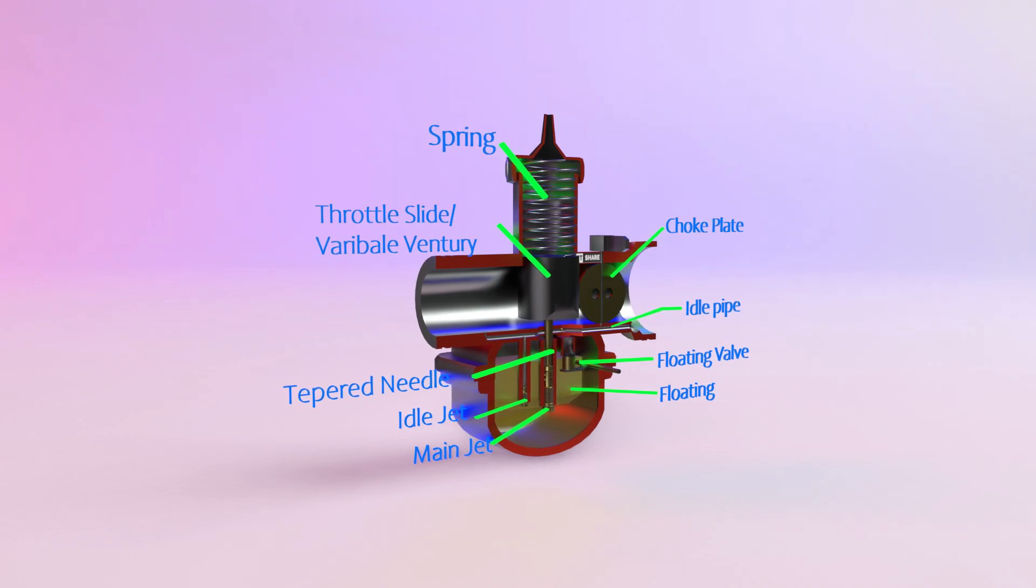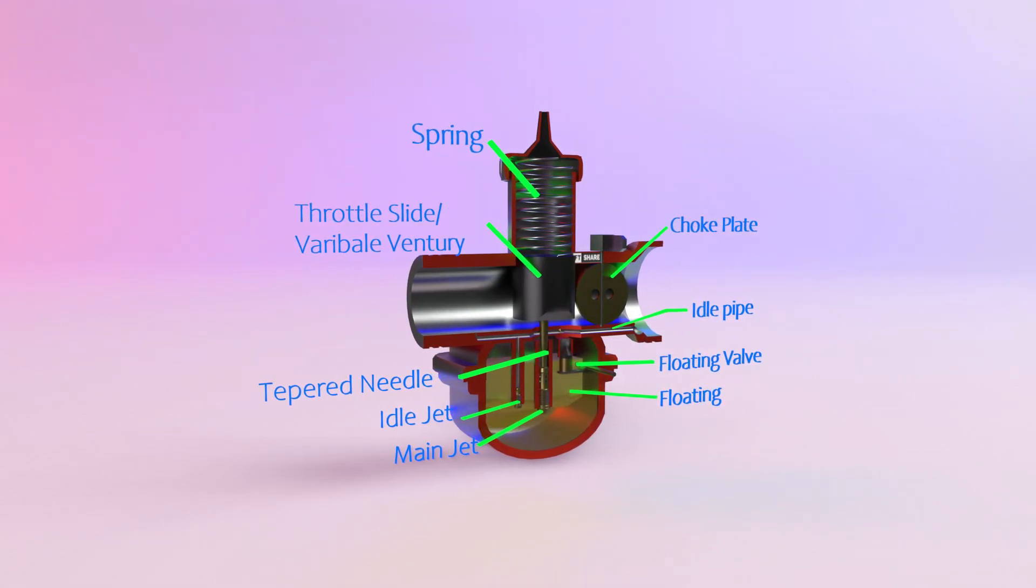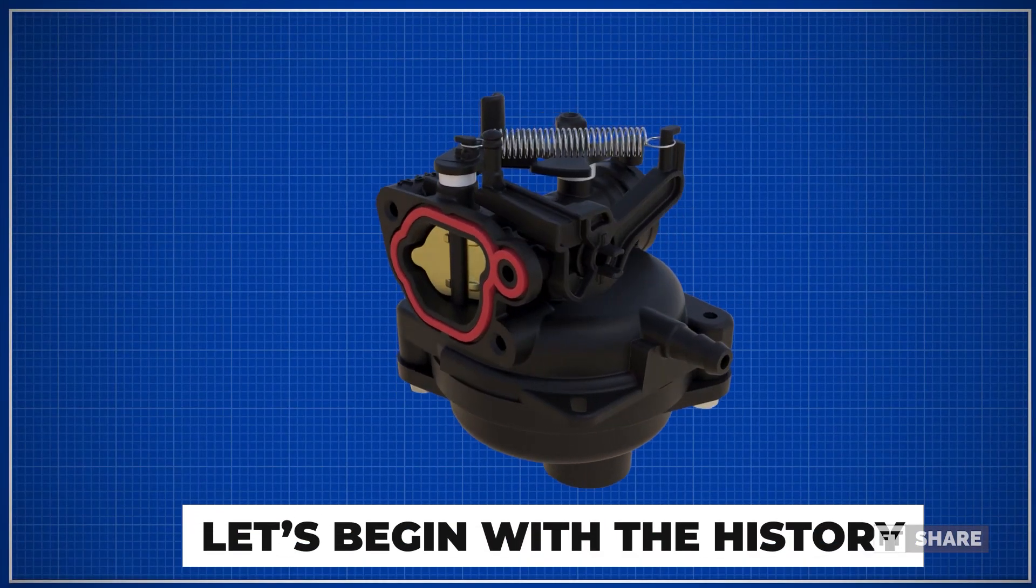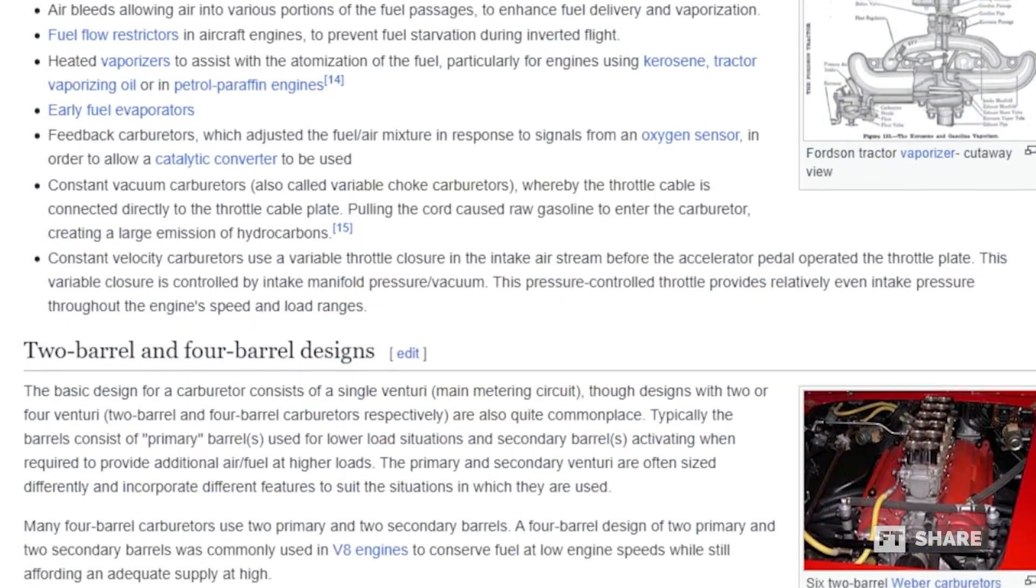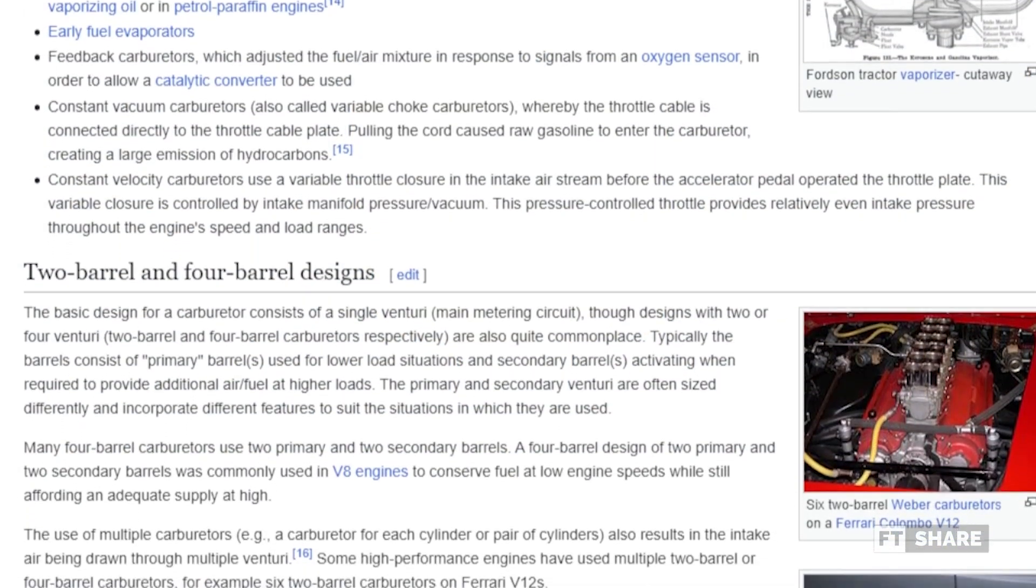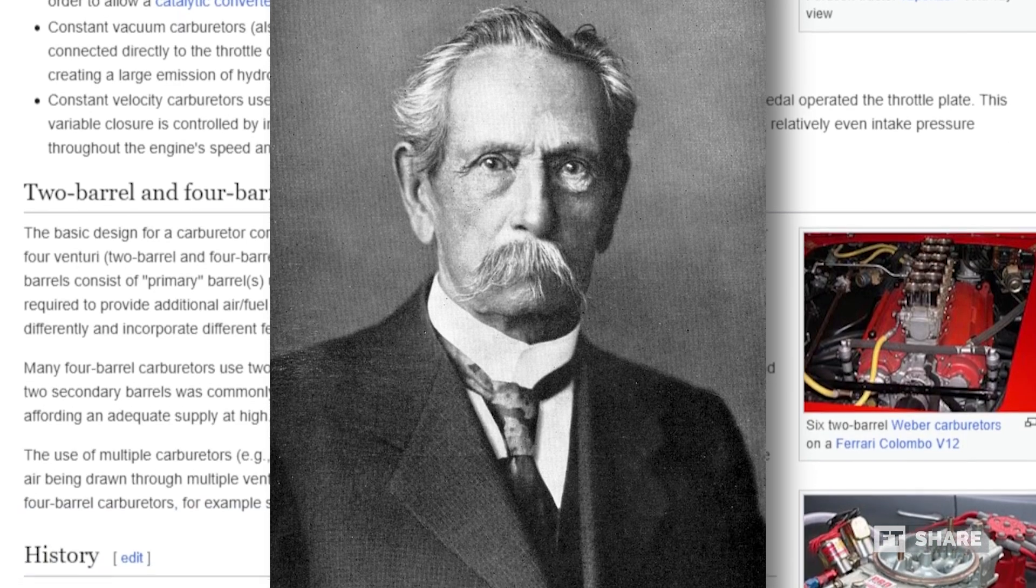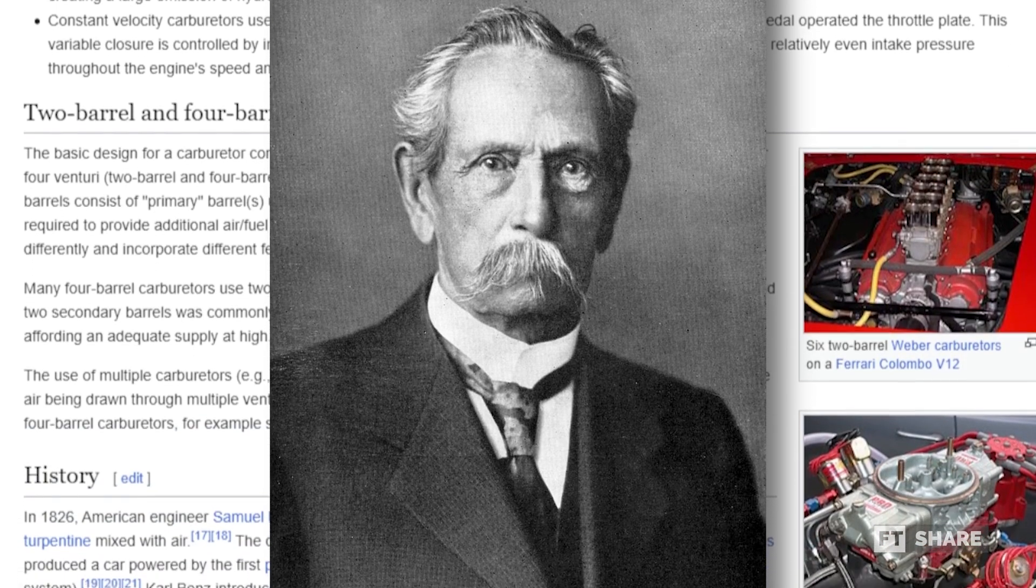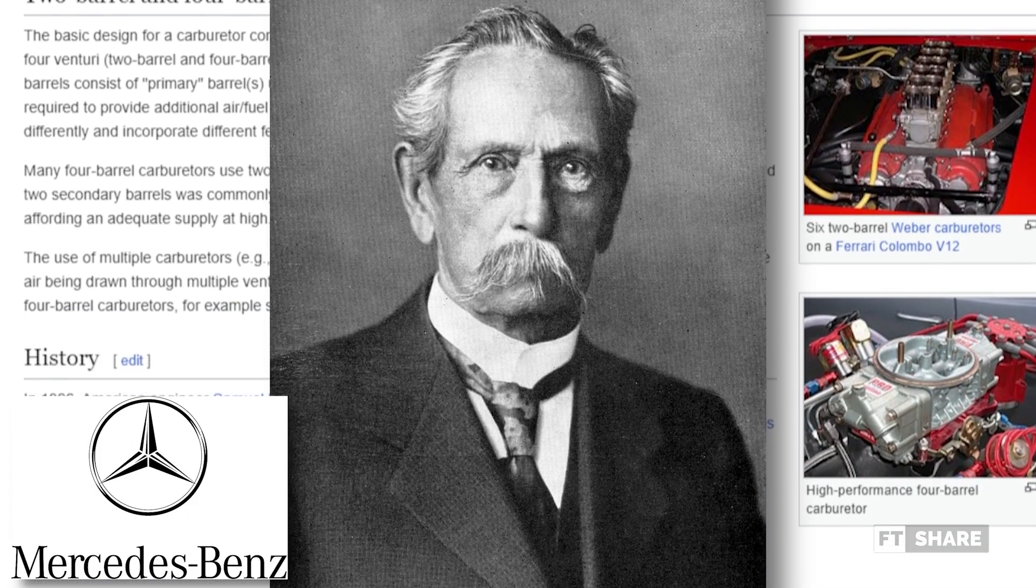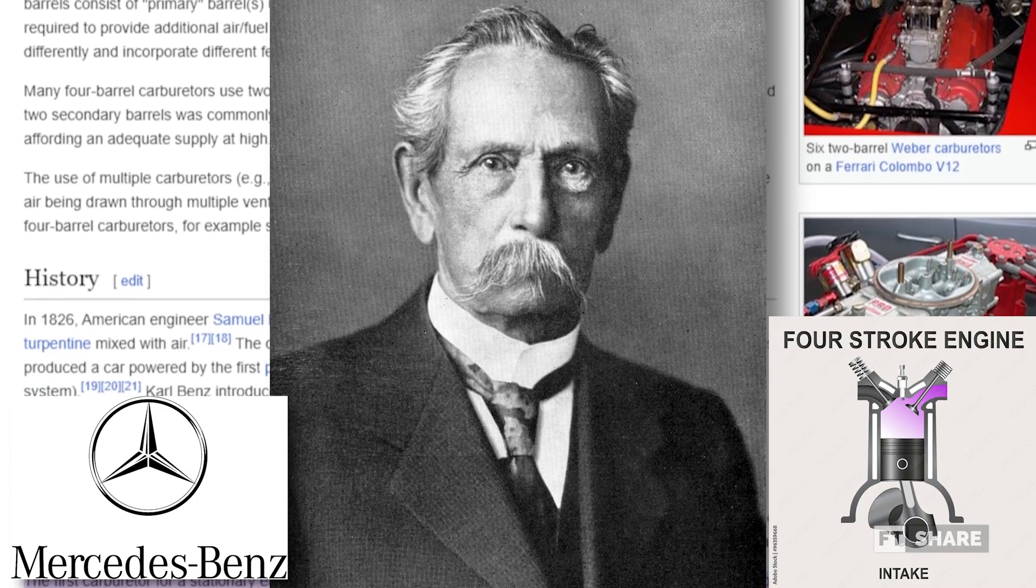Here is an overview of the carburetor. Let's begin with the history. The carburetor was first used in 1885 and was invented by Karl Benz, a German engineer who is well known for founding Mercedes-Benz and creating the world's first four-stroke engine.